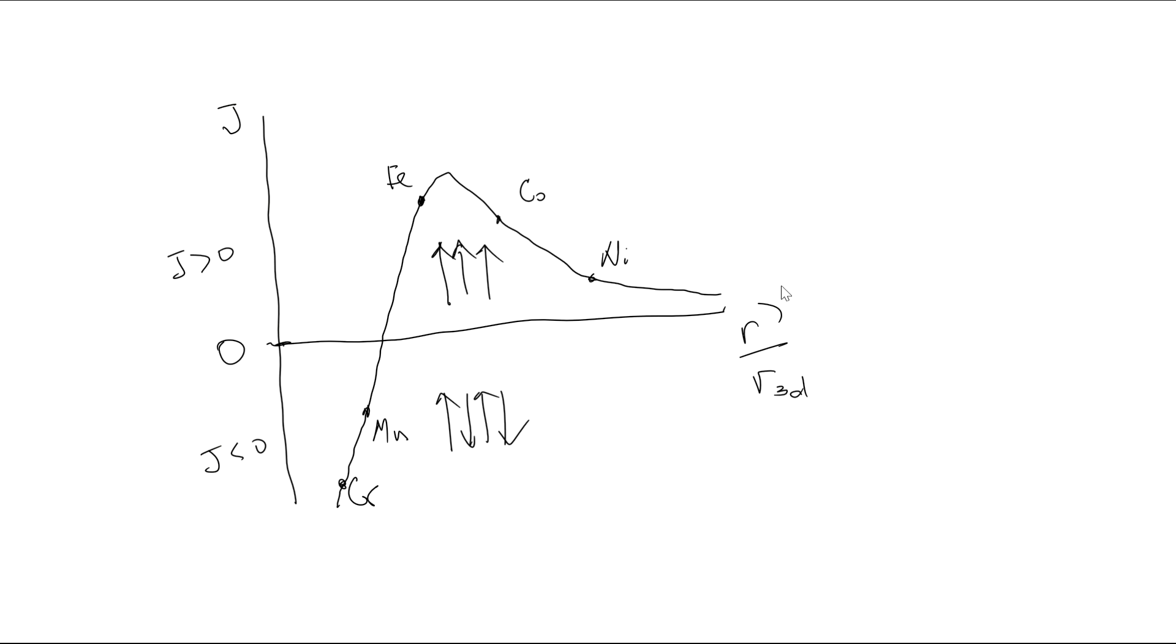R is basically our atomic radius, and R_3D is the average radius of the 3D shell. This curve has a name - it's the Beth-Slater curve. Looking at it, you can clearly see the interactions.